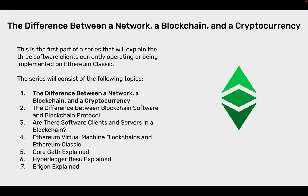The series will consist of the following topics: One, the difference between a network, a blockchain, and the cryptocurrency, which is this video. Two, the difference between blockchain software and blockchain protocol. Three, other software clients and servers in a blockchain. Four, Ethereum Virtual Machine blockchains and Ethereum Classic. Five, Core Geth Explained. Six, Hyperledger Besu Explained. Seven, Eragon Explained. These last three are the software clients.